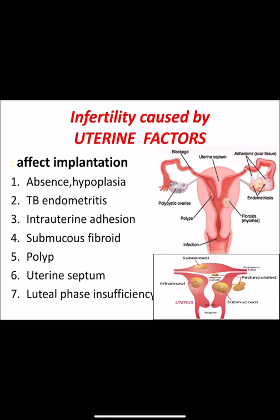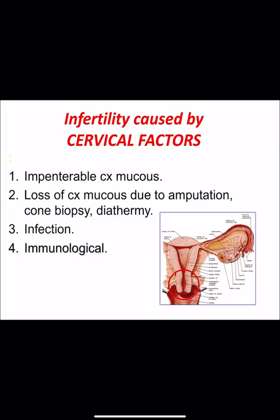Uterine factor prevents implantation of the fertilized ovum and may be due to absent uterus, TB endometritis, intrauterine adhesions, submucous fibroid, polyp, uterine septum, or luteal phase insufficiency. Diagnosis is made by hysterosalpingography — which identifies septum, submucous fibroids, polyps, and anomalies — or by hysteroscopy, which allows direct visualization of the uterine cavity and can treat conditions such as polyps, septum, or submucous fibroids at the same time.